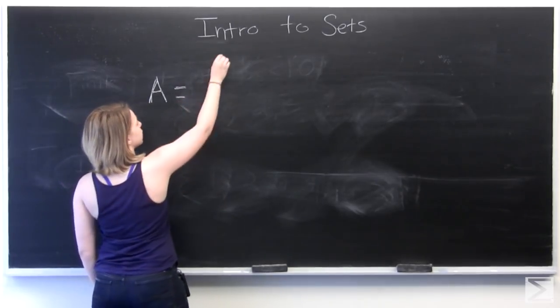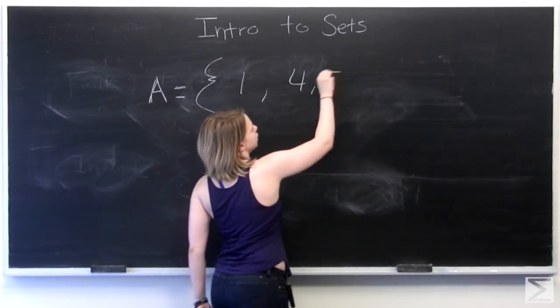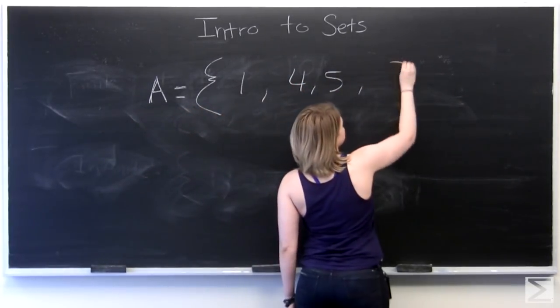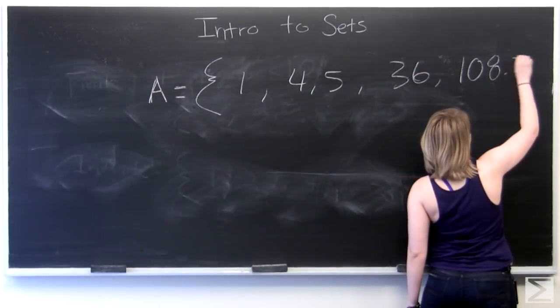For example, we've got a set A that equals 1, 4, 5, 36, 108.5.